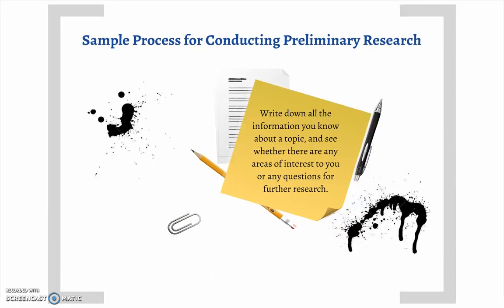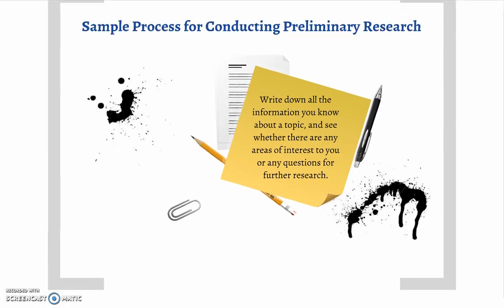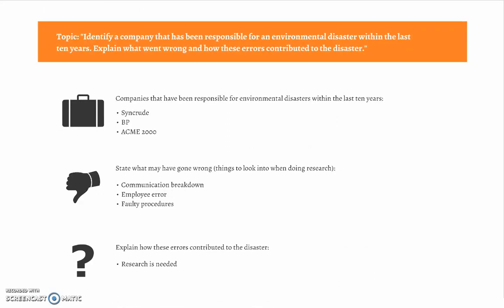Here is a sample process for conducting preliminary research. Write down all of the information you know about a topic and see whether there are any areas of interest to you, or any questions for further research. The topic is: Identify a company that has been responsible for an environmental disaster within the last 10 years. Explain what went wrong and how these errors contributed to the disaster.